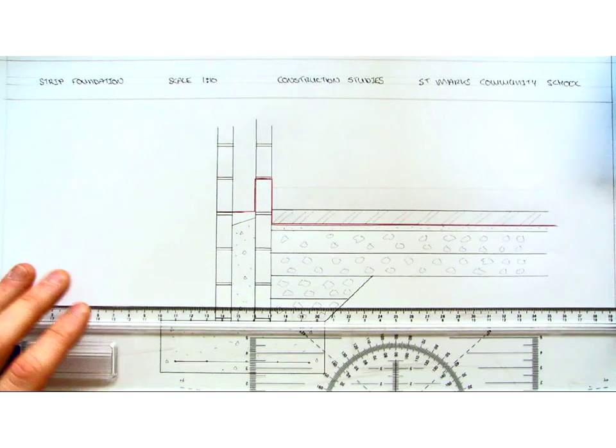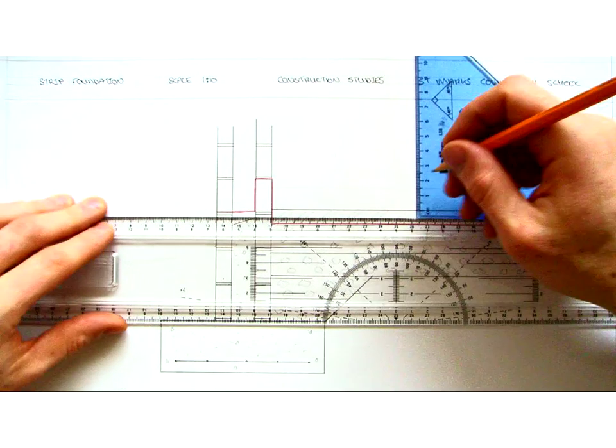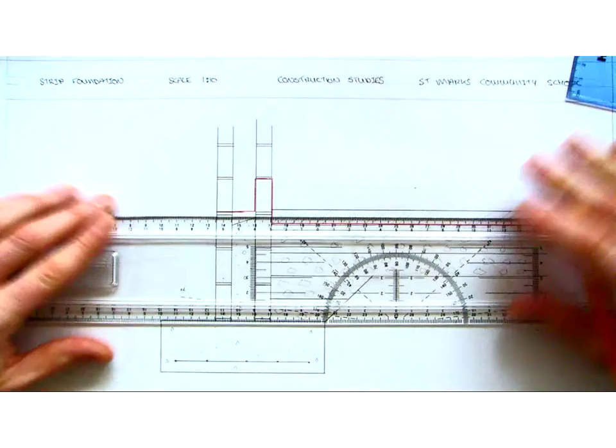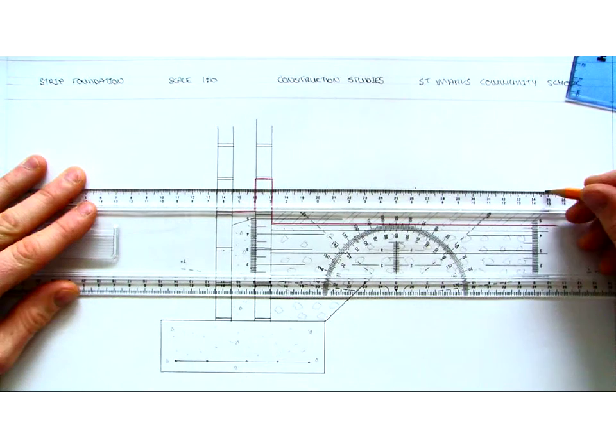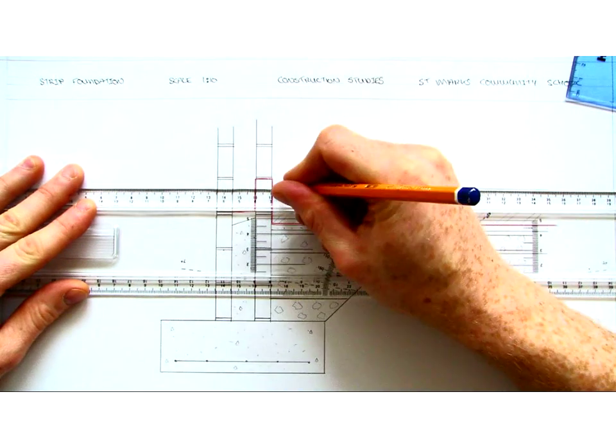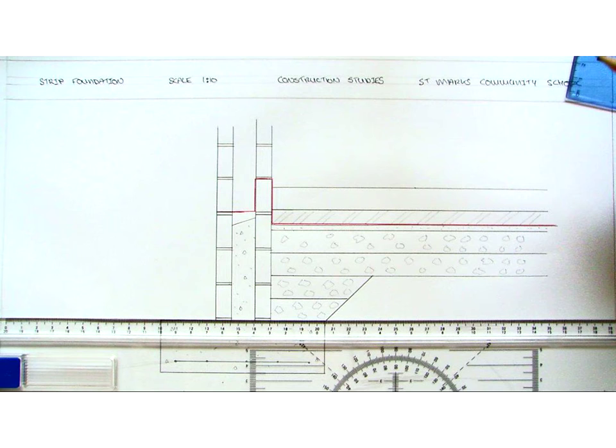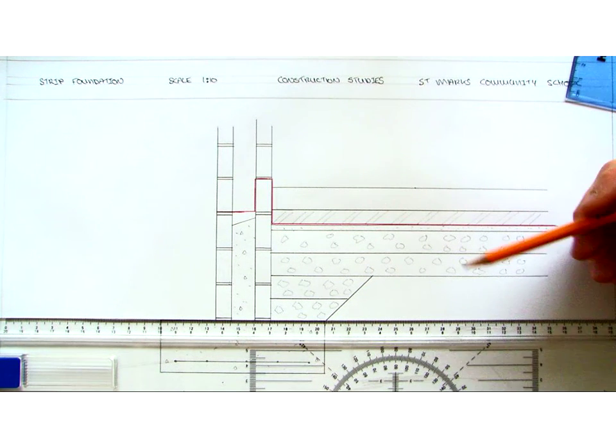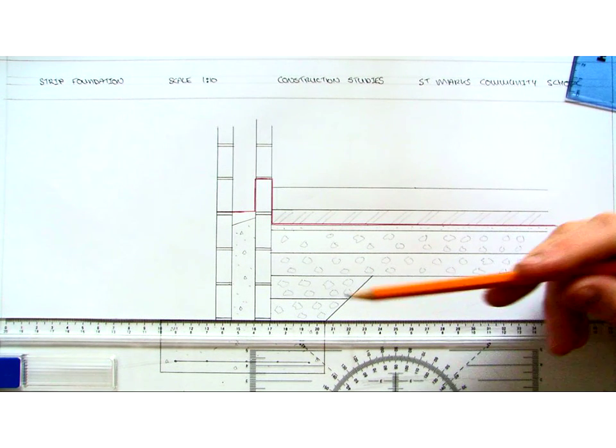Now on top of that we can mark in our 150mm subfloor. So our subfloor is going to be concrete. We can indicate that the exact same as we have done with our foundation and the infill in the cavity.